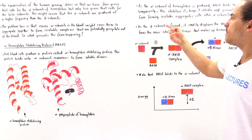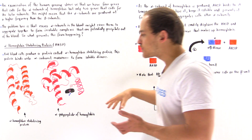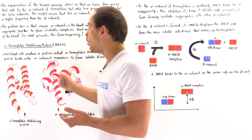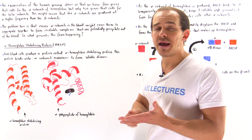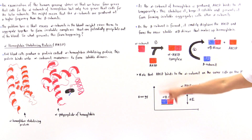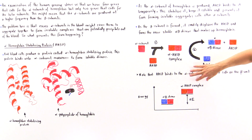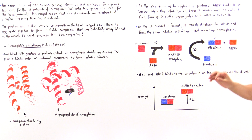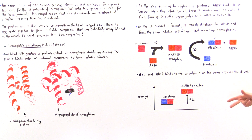As the red blood cells produce the beta subunit, that beta subunit will displace and replace the alpha hemoglobin stabilizing protein — it will kick off this protein and form the alpha-beta dimer. That's because the alpha-AHSP complex has a higher energy and is slightly less stable than the alpha-beta dimer, and this energy difference drives the equilibrium towards forming the alpha-beta dimer.